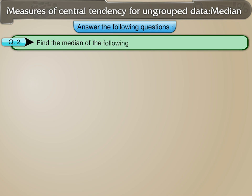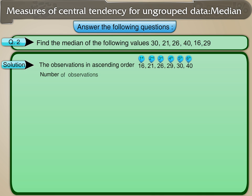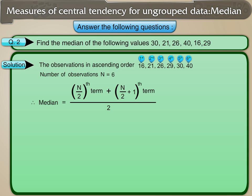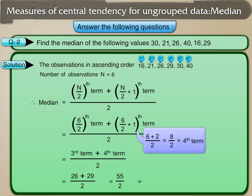Question 2: Find the median of 30, 21, 26, 40, 16, and 29. In ascending order: 16, 21, 26, 29, 30, 40. The number of observations n equals 6. Since n is even, the median equals the average of the (n/2)th and (n/2+1)th terms, which are the 3rd and 4th terms. That gives (26 plus 29) upon 2 equals 55 upon 2 equals 27.5.